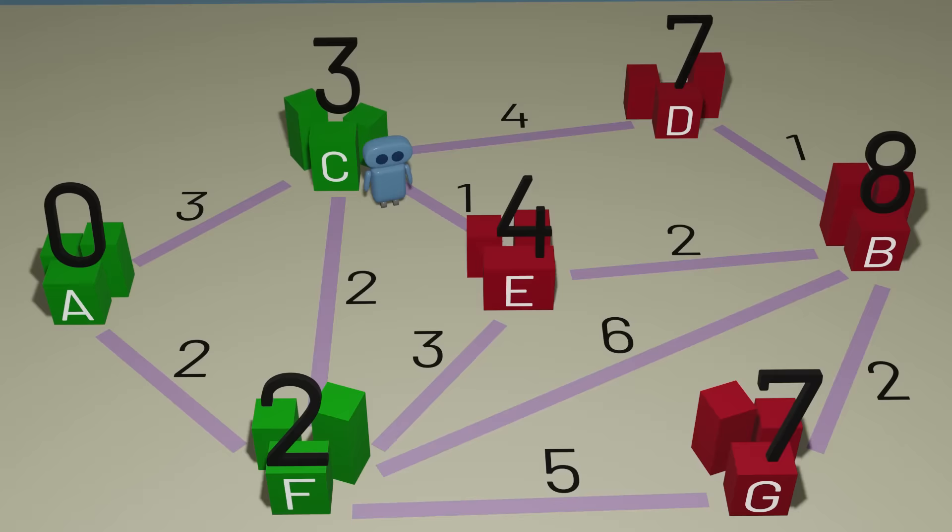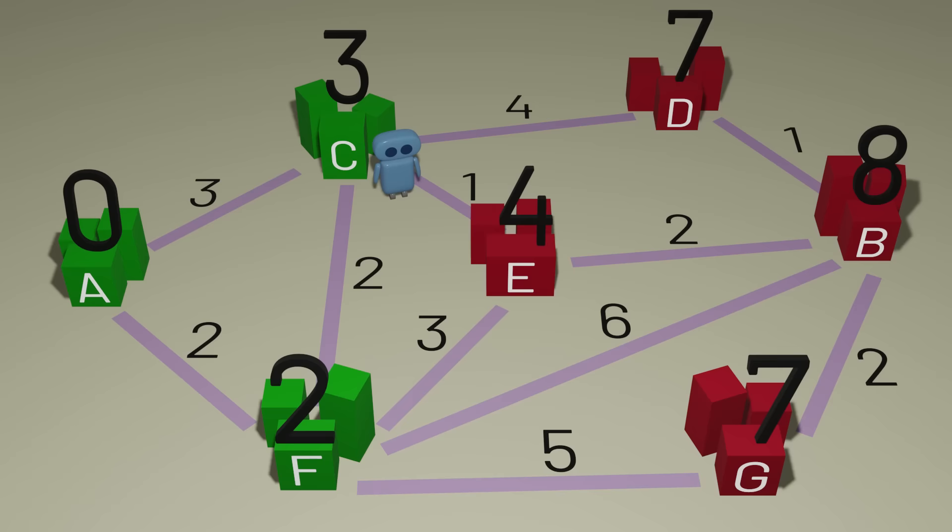The next town to explore is town E. Among all the unexplored towns, it has the smallest value. Notice that each time we explore a new town, it's guaranteed that we will have found the shortest path to get to that town. Since if there were some shorter path, we would have explored that shorter path first because we prioritize exploring the smaller values.